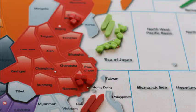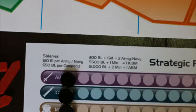Next, we owe money to the troops. We have a total of nine right now. They are $10 billion each, so we owe $90 billion.